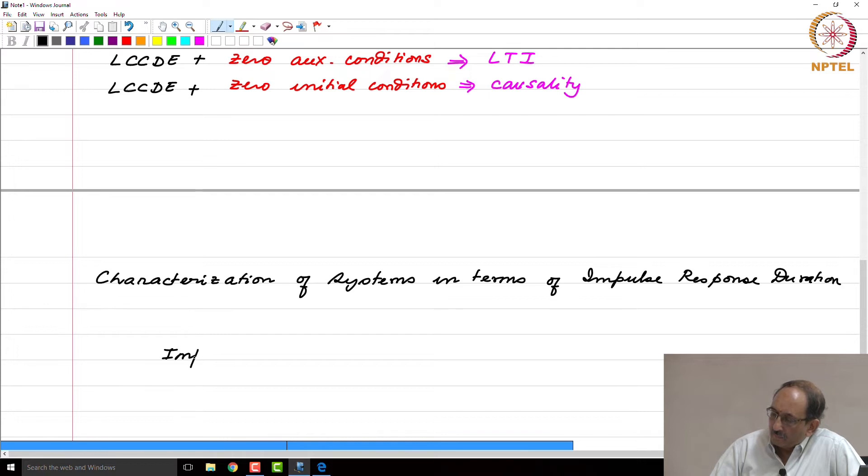The impulse response duration can either be finite or infinite. If the impulse response duration is finite, this is called finite impulse response and this is denoted as FIR.